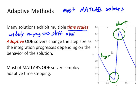Adaptive ODE solvers actually will change the step size as the integration progresses depending on the behavior of the solution. It has some way to test the behavior of the solution, and then actually will reduce the step size if necessary to maintain accuracy through those quickly changing parts of the solution. And this is just some example solution over here to the right.